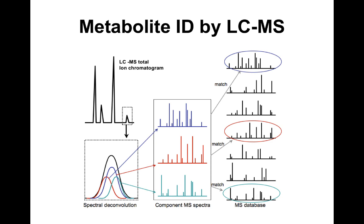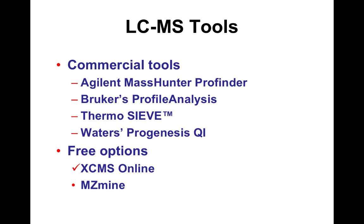Now, LC-MS. The figure looks almost identical to GC-MS — we work with liquid chromatographic outputs, and most LC peaks have multiple compounds buried under them. We can collect ESI-MS or MS-MS spectra for these, and the combination can be matched against a library to identify compounds. Many tools facilitate this — commercial ones from Agilent, Bruker, Thermo, Waters, and Sciex, plus free options like XCMS, MZMine, and several others.